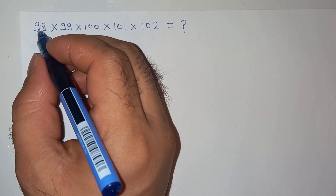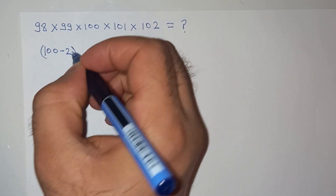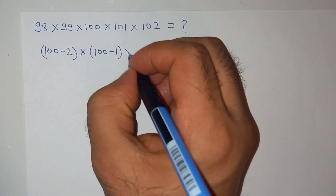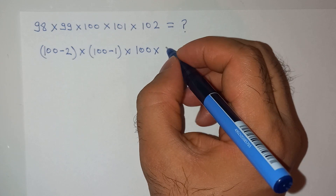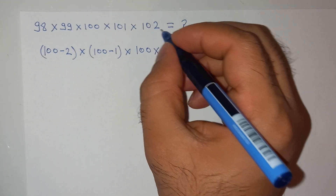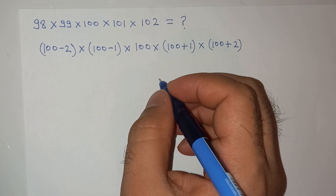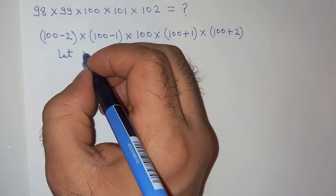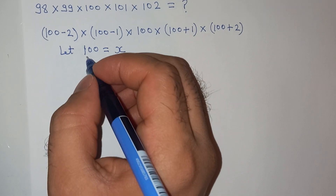To solve this question, we can write 98 as (100 − 2), 99 as (100 − 1), 100 as 100, 101 as (100 + 1), and 102 as (100 + 2). Now let x = 100.